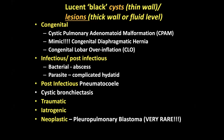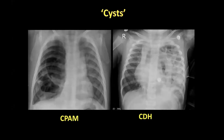Moving on to lucencies with a fluid level: classic in an infant on the left side is a CPAM — don't confuse it with a congenital diaphragmatic hernia on the right. These patients often present at birth but may present later with multiple thin-walled cysts. We often discuss whether there was an infection, whether these are post-infectious pneumatoceles, or whether it's an underlying congenital pulmonary airway malformation and what to do next. Clinical context matters: if a patient has never had an infection, you go down a different imaging algorithm than if they've had strep and staph infections.